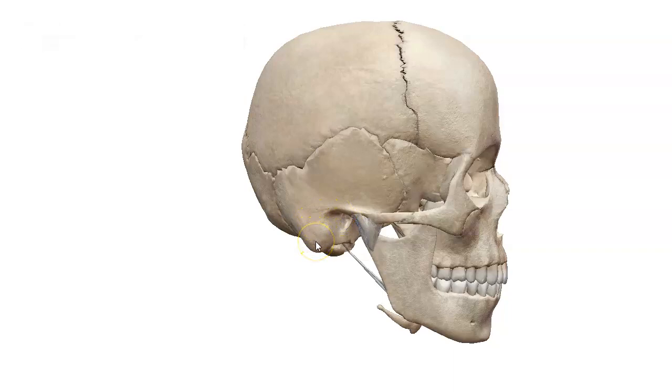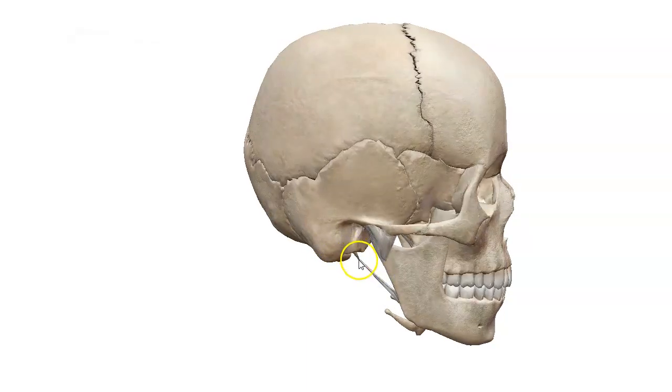Right behind it we have the mastoid process, and this little pointy area is called the styloid process. Looks like a stylus pen, if it helps you remember.